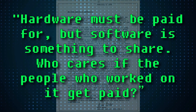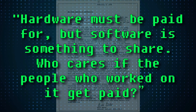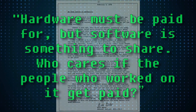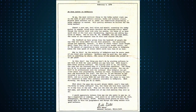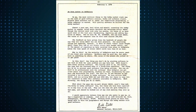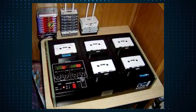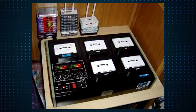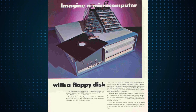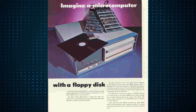"Hardware must be paid for, but software is something to share. Who cares if the people who worked on it get paid?" Of course, what could anyone do to prevent paper tape being copied? Well, not really much. Or even cassette tapes, which could pretty easily be copied with any high-quality tape duplicator. It was not until the widespread use of floppy disks in the late 70s and early 80s that a truly effective copy protection scheme came about.